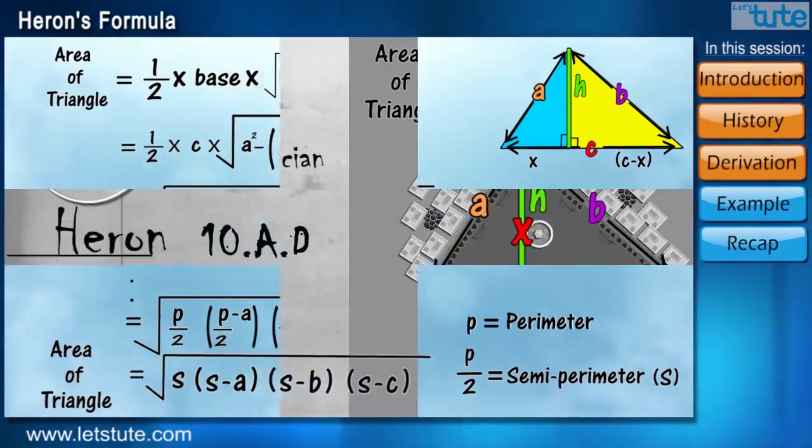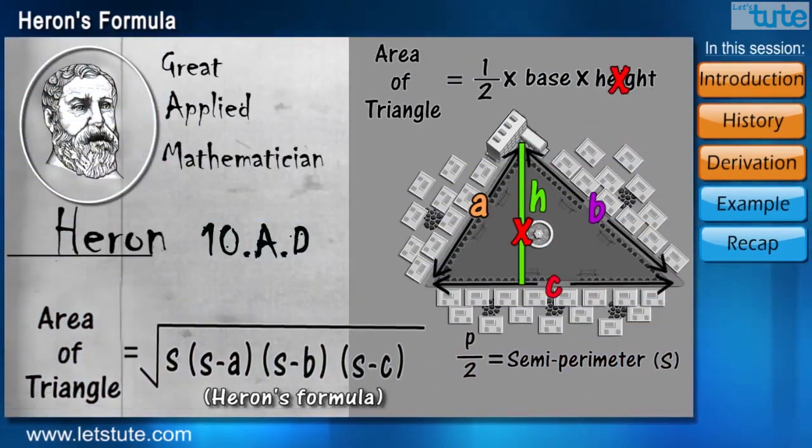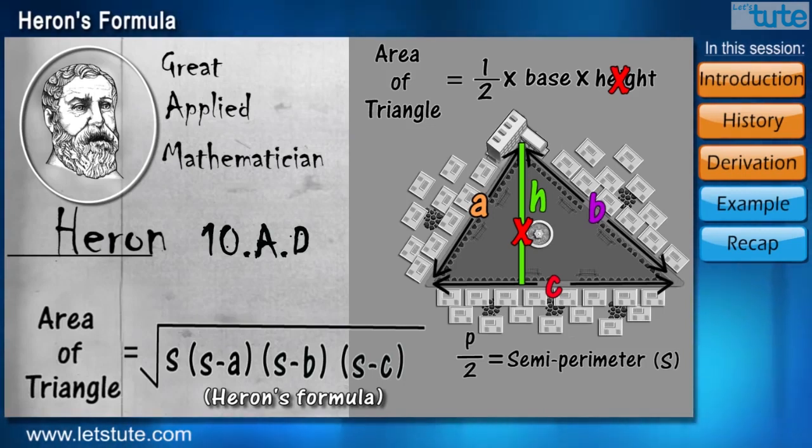He finally came up with a formula that can calculate the area of triangle without its height and by using only the side length information and its perimeter. And actually, the formula is very easy to remember also. We have to subtract all the sides with the semi-perimeter and multiply everything with the semi-perimeter again and take a square root of it.